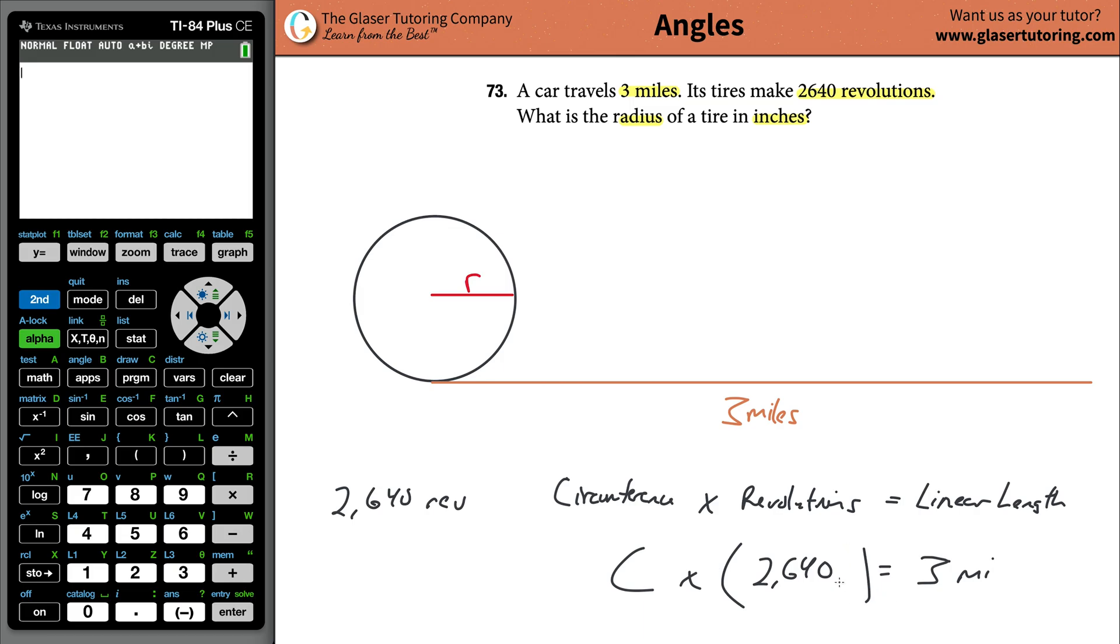Now, if you consider the units, when you solve for your circumference, it's going to be in terms of miles per revolution. Because what we're going to have to do is divide out the 2,640 from both sides. Plug it into your calculator now, three divided by 2,640. And there we get our answer. The circumference is now equal to 0.00114 miles per revolution.